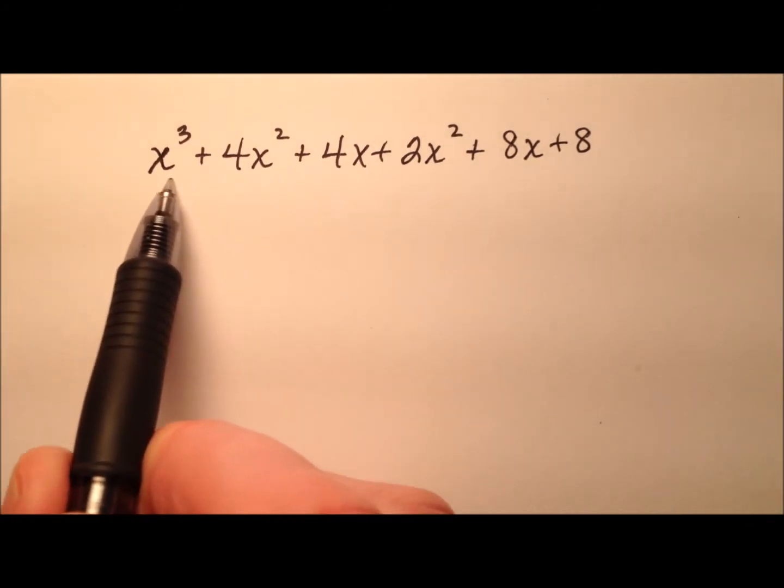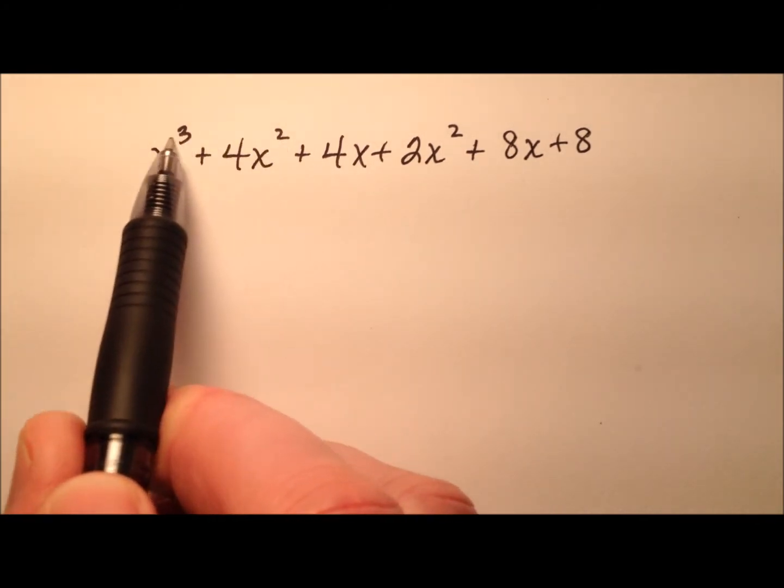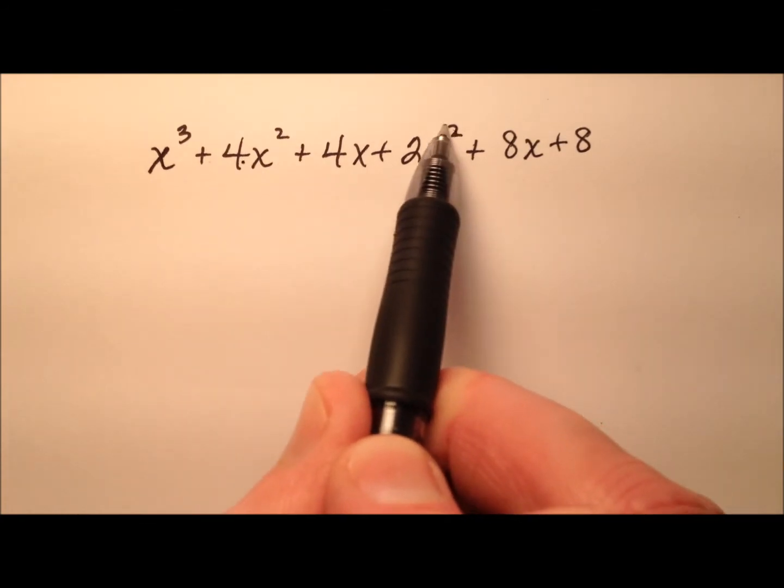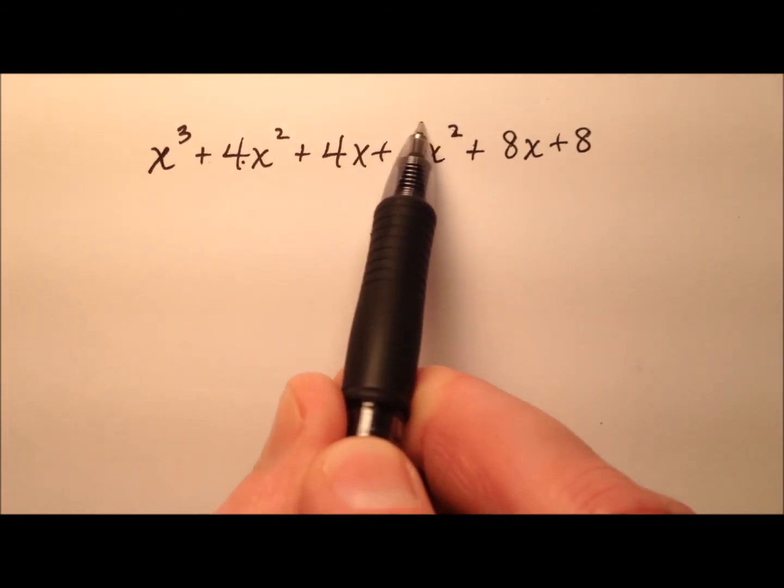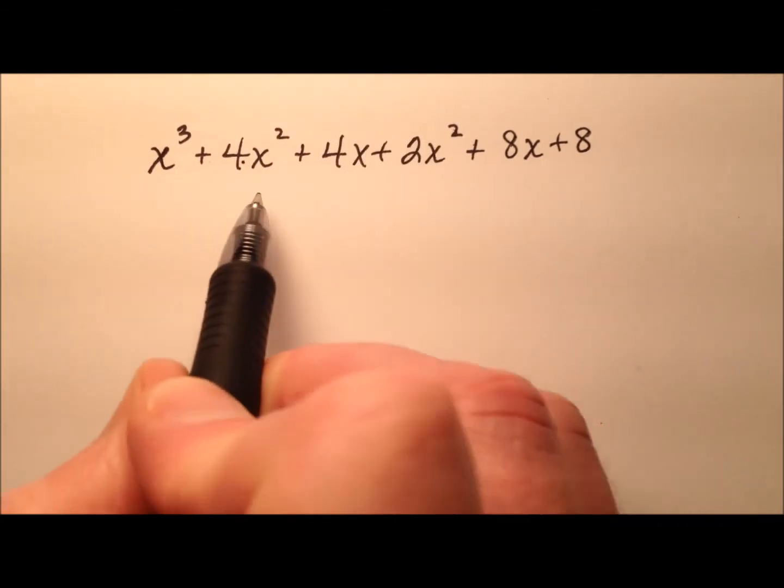So let's look for pairs first. If I take an x squared out, then I have an x plus 4. But if I take a 2x out here, I won't end up with an x plus 4.